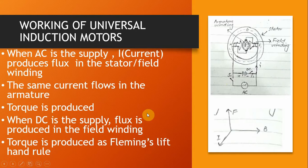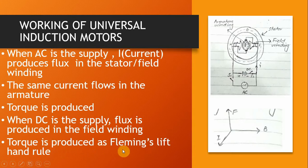Similarly, when DC supply is provided to this motor, the flux is produced in the field winding, and the torque is produced according to Fleming's left hand rule. As you can see, with the magnetic field lines and the current direction, the produced force will be in this direction.